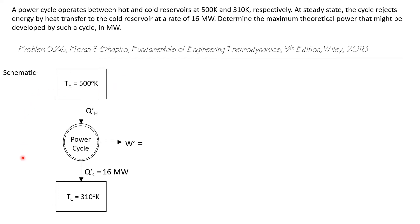So here's a schematic of our power cycle. We have a hot reservoir operating at 500K. We have a cold reservoir operating at 300K. And we know that the rate of energy transfer between the power cycle and the cold reservoir is 16 megawatts. And we want to determine what the power output of this cycle could be.